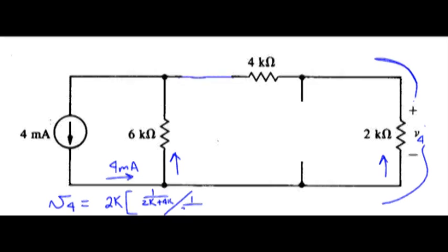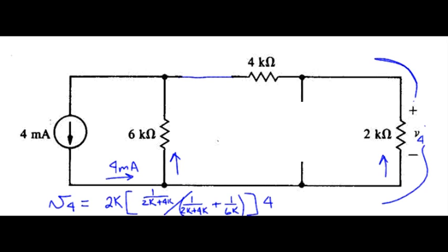So we repeat that number—I'll put parentheses there to clarify that one—plus 1 over 6k, multiply that by 4 milliamps.